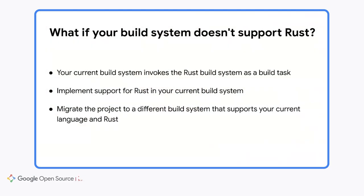Thank you, Dimitri. Hello everybody, my name is Marcel. I work as a software engineer at Google and I work with Dimitri. As he said, you will need to evaluate your current development process and plan how Rust will fit in. Let's talk about your build system. There is a chance that your project uses a build system that does not support Rust. In that case, you will need to take care of that first, and there are two options. Your first option is to add a second build system to your project — for example, Cargo. This second build system will be responsible only for Rust code, and your current build system will invoke the inner Rust build system as a build task.